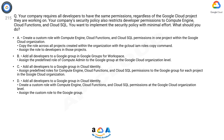C: Add all developers to a Google Group in Cloud Identity. Assign predefined roles for Compute Engine, Cloud Functions, and Cloud SQL permissions to the Google Group for each project in the Google Cloud organization.